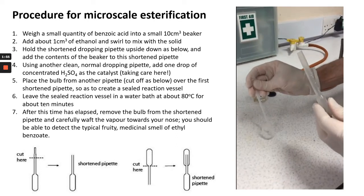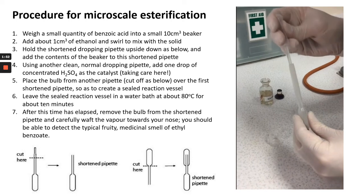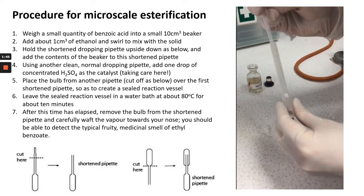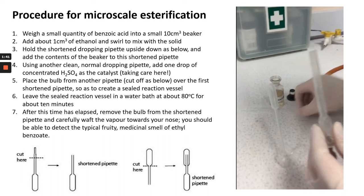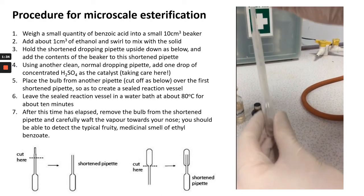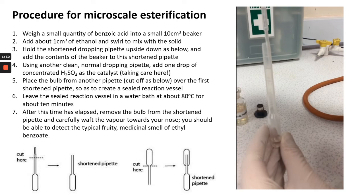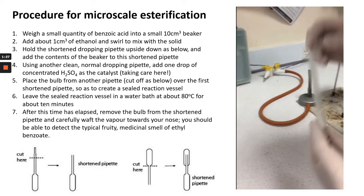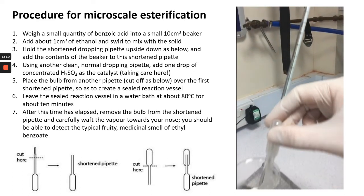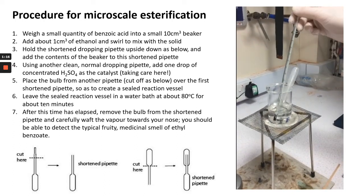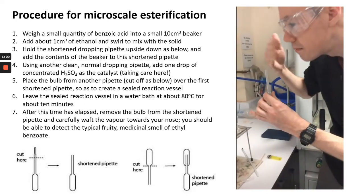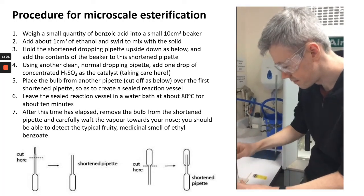Putting the reaction mixture carefully into one of the cut pipettes — the one with the neck remaining — that's going to form the main reaction vessel. In the background is a stock bottle of concentrated sulfuric acid; we're going to add one drop of that to act as our catalyst. Because of the risks involved in handling it, doing it at micro-scale makes it safer. We then put the bulb of the other pipette on top to form a semi-sealed reaction container. The water bath has been set up at 70 to 80 degrees C, and it's left for 10 minutes to esterify. Then Ollie carefully wafts the vapour towards his nose to detect the smell of ethyl benzoate.